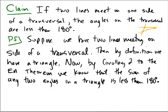Of course, what corollary two says is that any two sum to be less than 180. So we get what we want. And that's the end of the proof.